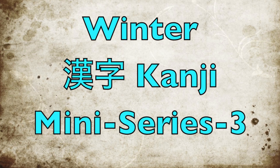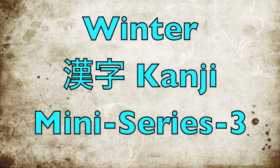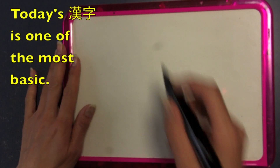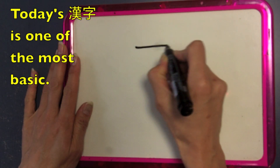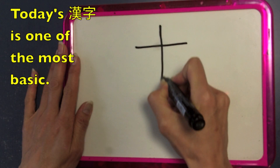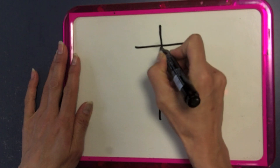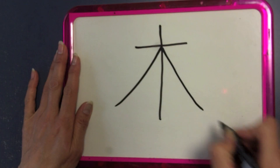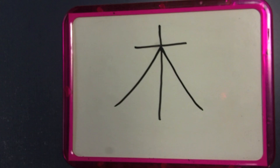Hello there morons, it's Victor back again with the third in our mini-series of winter kanji. Today's kanji is one of the most basic, and you've probably seen it around. It's a four-stroke kanji, and the meaning is very similar to the actual shape. As you can see, it looks like a tree — and it is a tree.